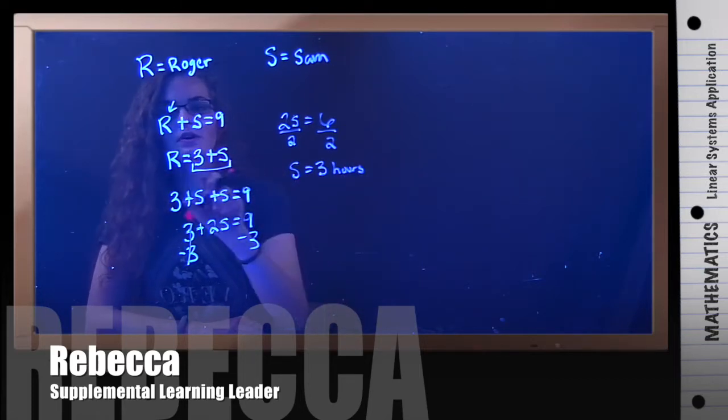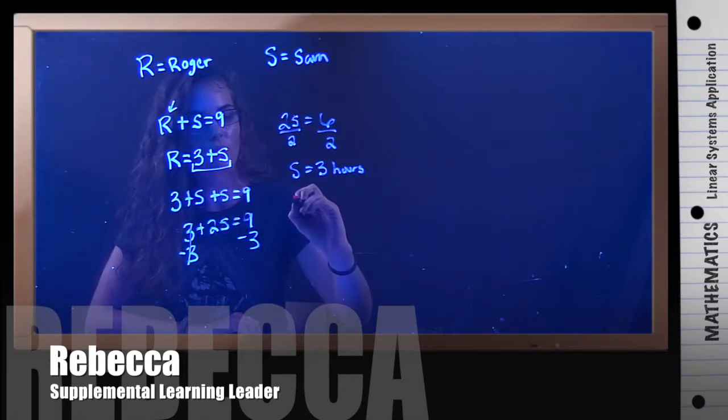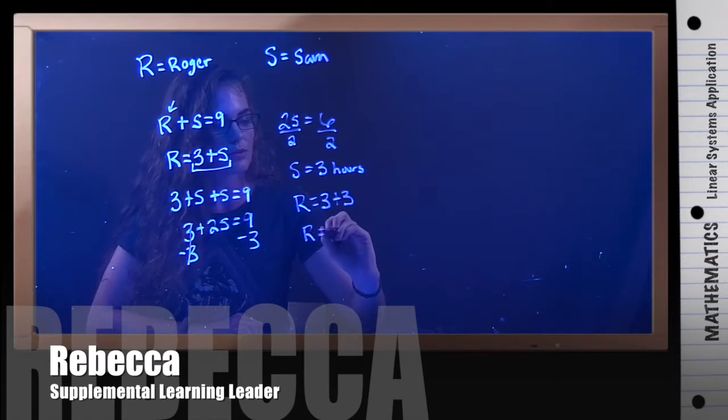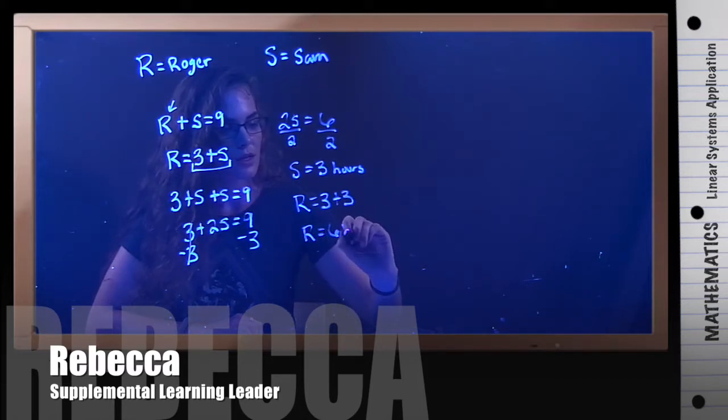Now we still have to figure out how long it took Roger. But if we use this equation that already has R isolated, we can just plug in 3 for S. So we have 3 plus 3. So R equals 6 hours.